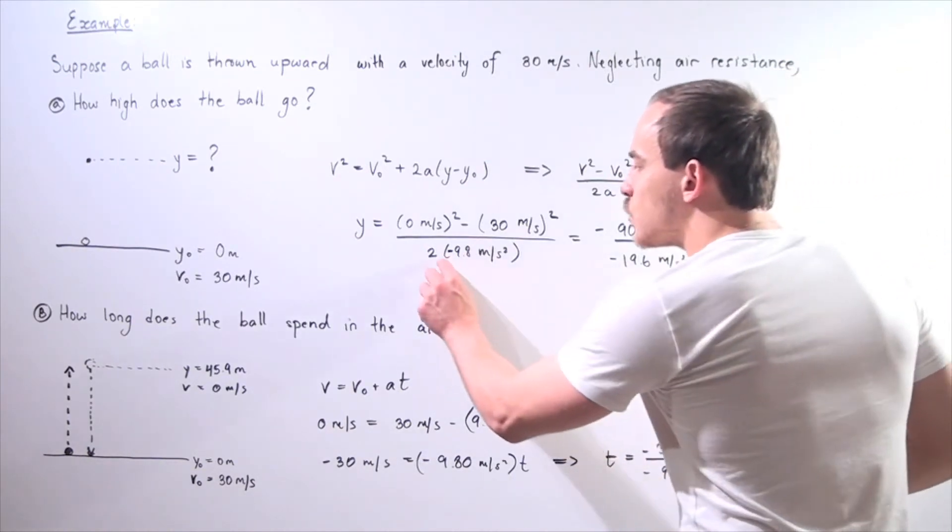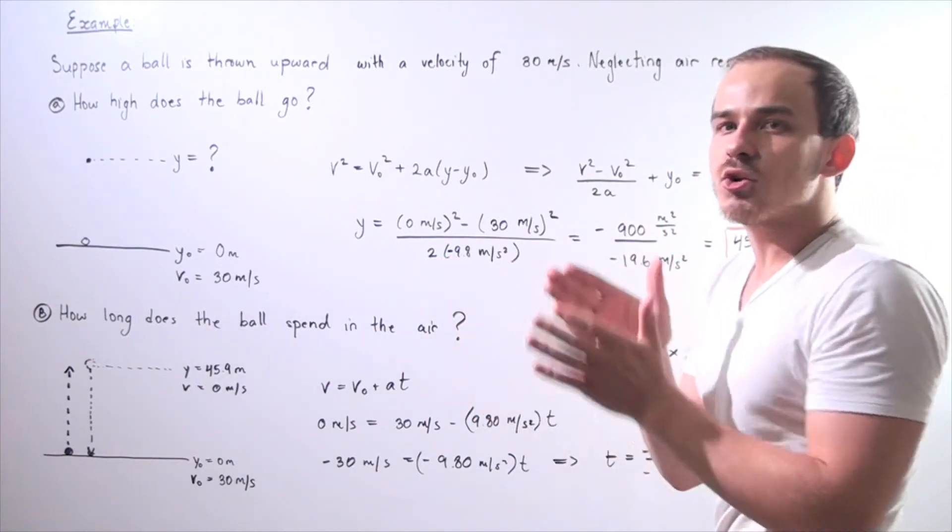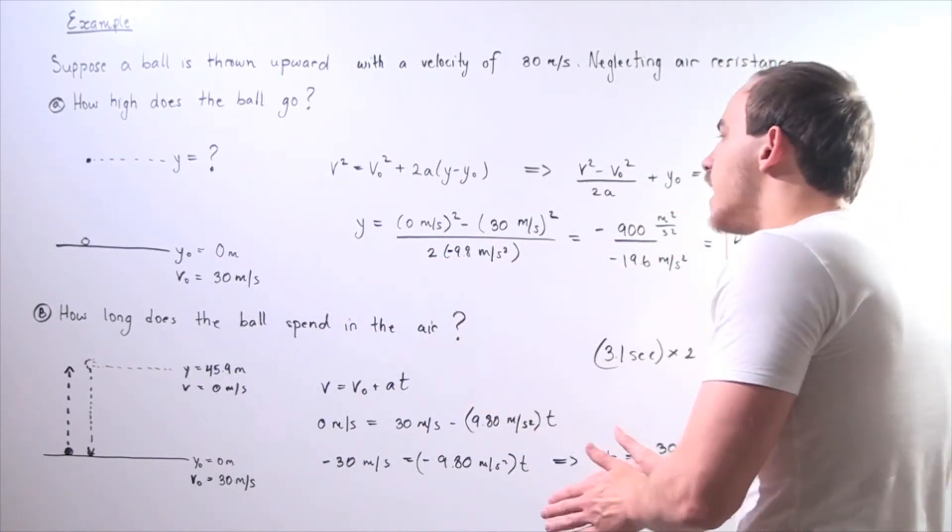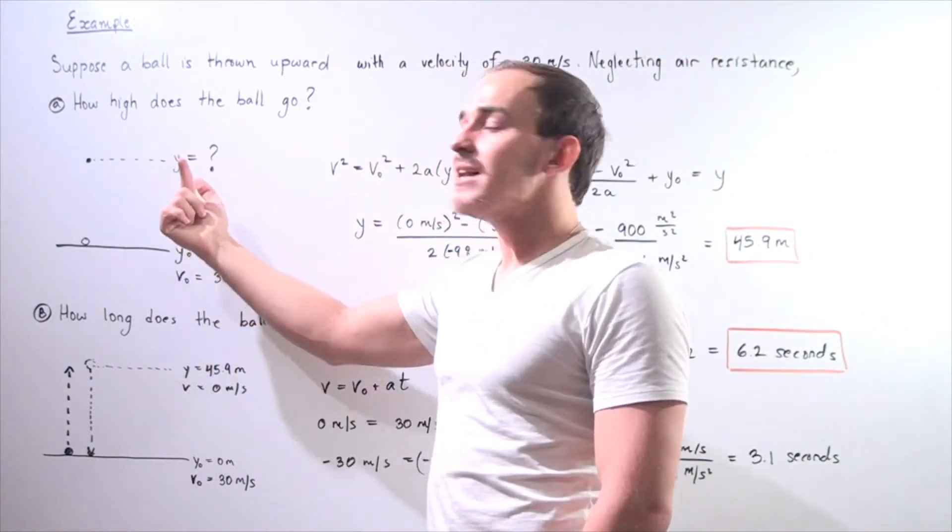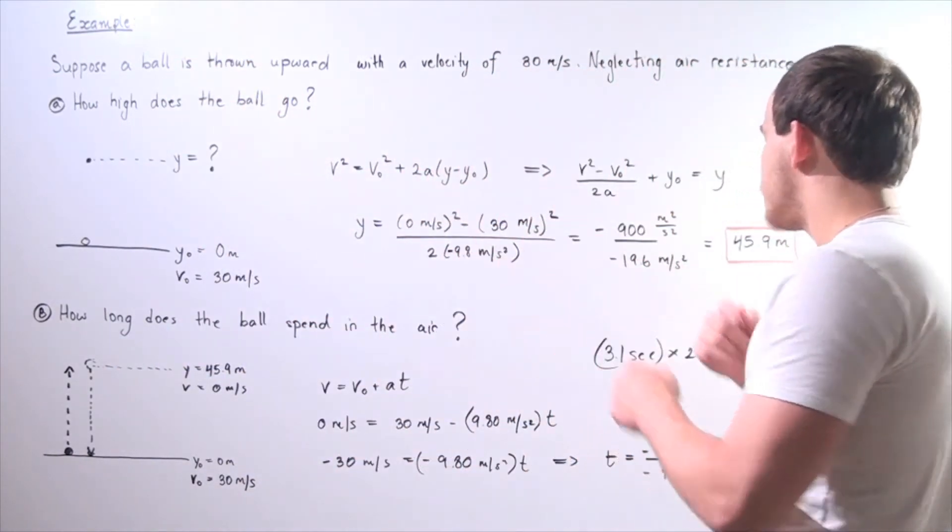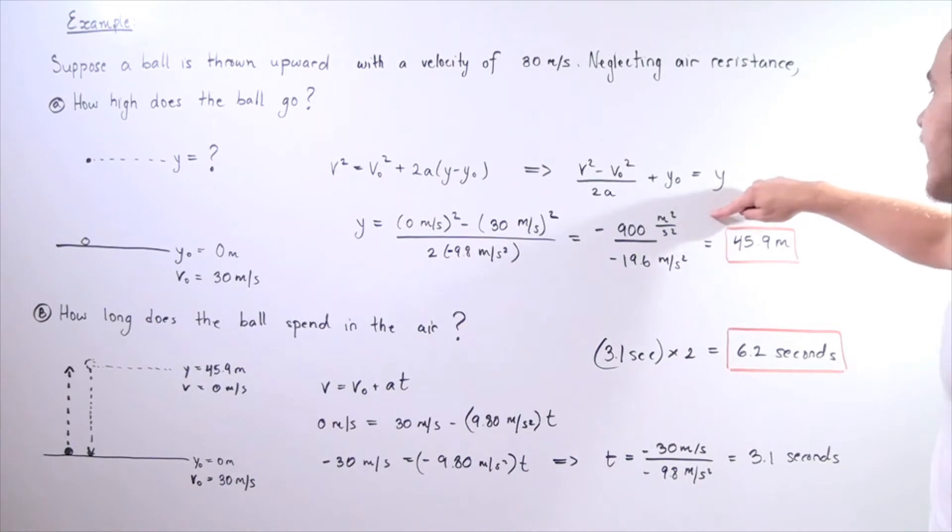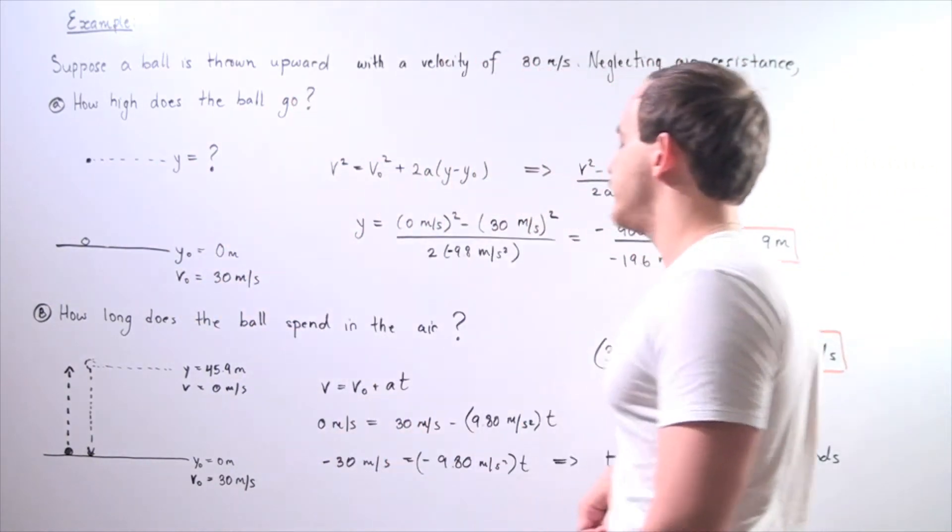So the top and bottom are negative, so our answer should be positive. So we have 900 divided by 19.6, and we get approximately 45.9 meters. Once again, why is our gravitational constant negative? Because it's in the opposite direction of our velocity. Our velocity is positive going upward, and our gravitational constant is pointing downward. So that means the signs are opposite. So that means our final position of our ball is 45.9 meters above our ground.